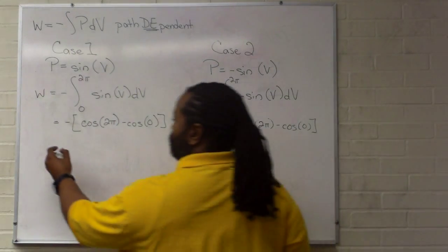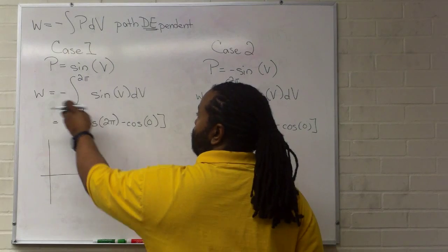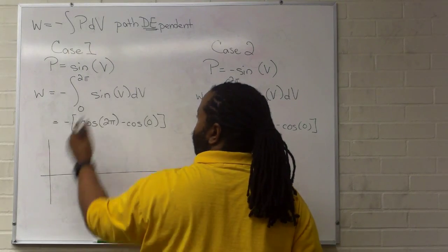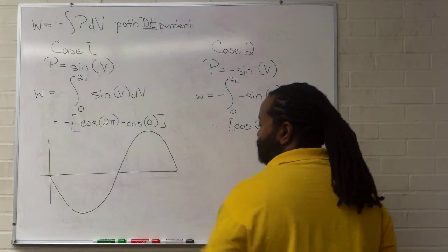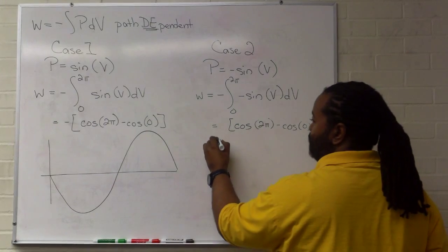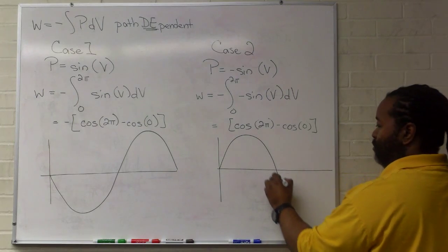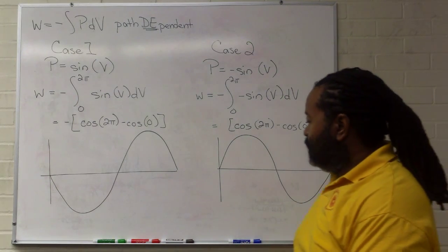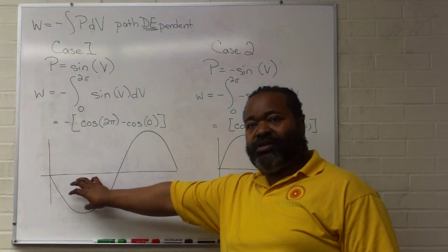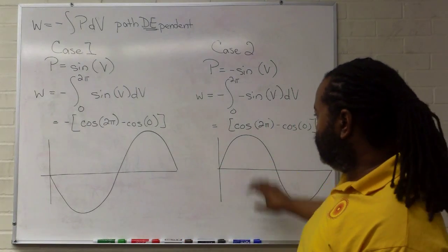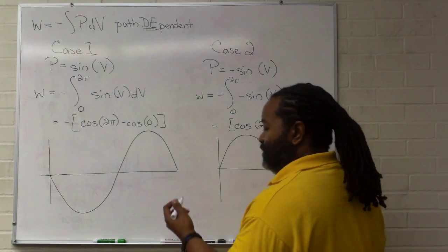That will illustrate why this ends up not exactly working out the way we might expect. For case one, negative sine being the thing integrated will go down first, then come back up and complete the cycle. In case two, the double negative gives us a positive, so graphically we start by going up and then down. In case one we start off entering a deficit in work and then pick it back up; in case two we're picking up work and then hitting a deficit.